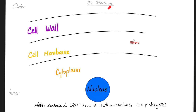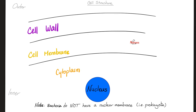Here is a schematic diagram to show you the basic cell structure of a bacteria. On the outside we have the cell wall, followed by the cell membrane — also known as plasma membrane or cytoplasmic membrane — and then the cytoplasm. When you dig deeper, you find the nucleus. Please don't forget that bacteria are prokaryotes; they do not have a nuclear membrane. This is just a schematic diagram, so do not take it very seriously.